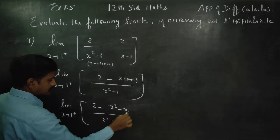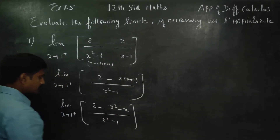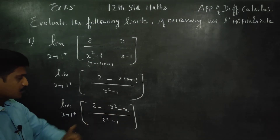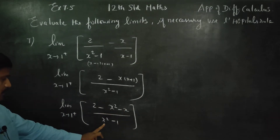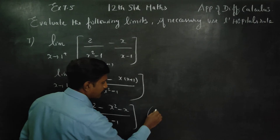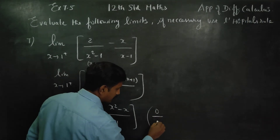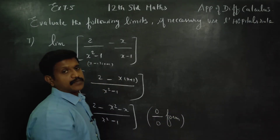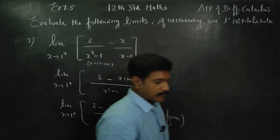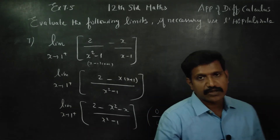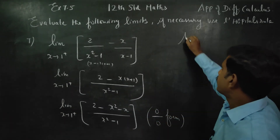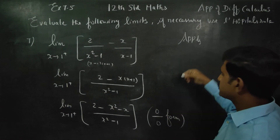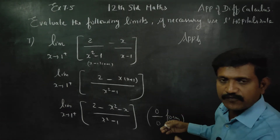By x squared minus 1. If we substitute x equals 1, then 1 minus 1 is 0. How many form do we have? 0 by 0 form — that is an indeterminate form. Apply L'Hôpital's rule.